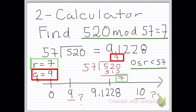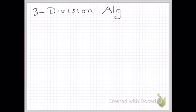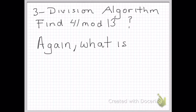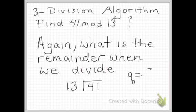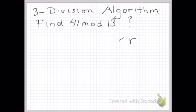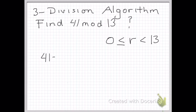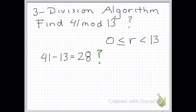And 520 mod 57 equals 7. Recall that r, our remainder, is between 0 and 57. Now we'll try the division algorithm. Find 41 mod 13 — what is the remainder when we divide 13 into 41? We want to find quotient q and remainder r. Recall that our remainder has to be between 0 and 13. With the division algorithm, we take 41 and subtract 13 repeatedly until we find r between 0 and 13.